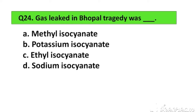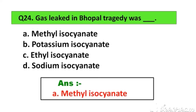Question number 24. The gas leaked in the Bhopal tragedy was: Option A. Methyl isocyanate, B. Potassium isocyanate, C. Ethyl isocyanate, D. Sodium isocyanate. The right answer is Option A. Methyl isocyanate.